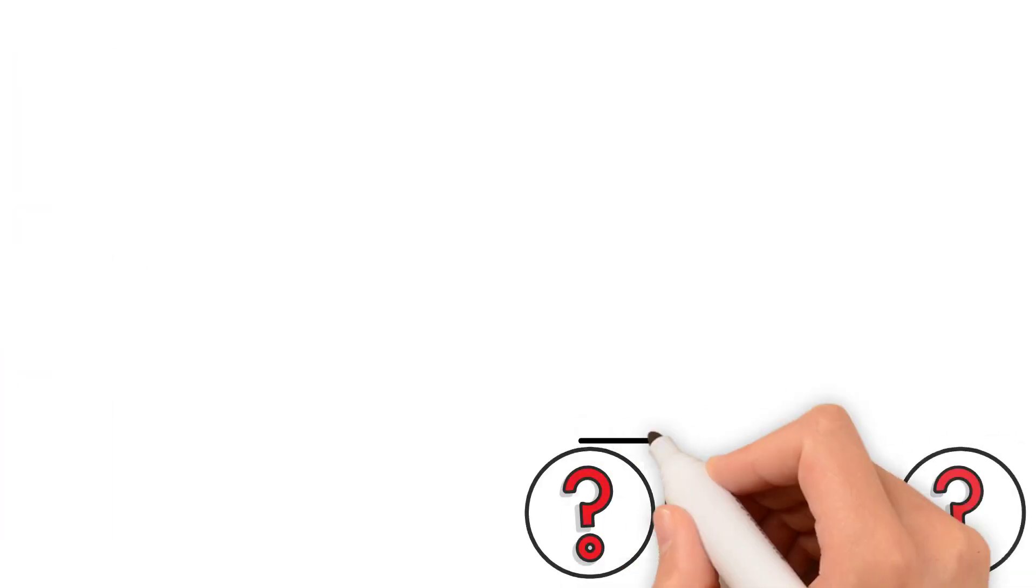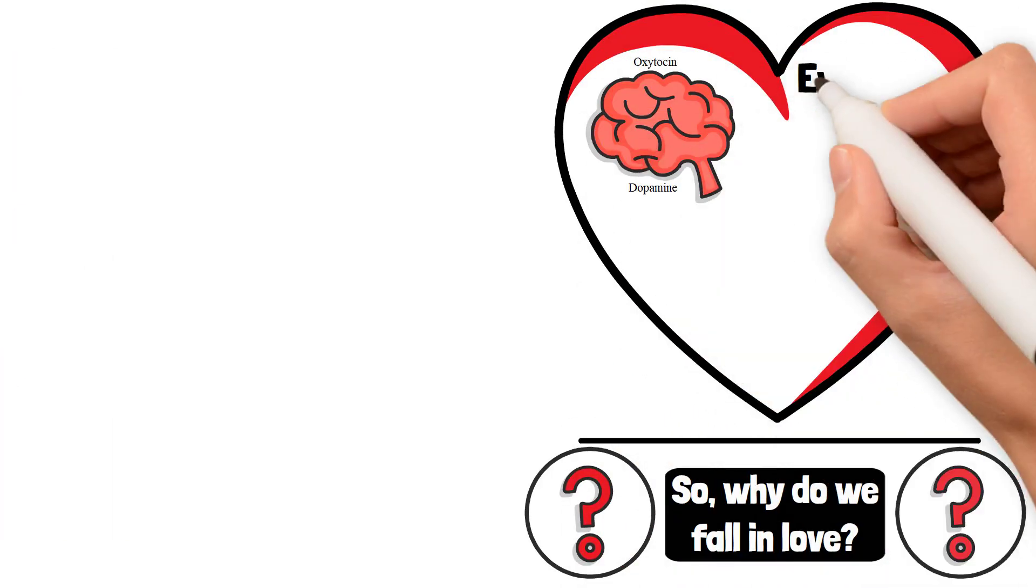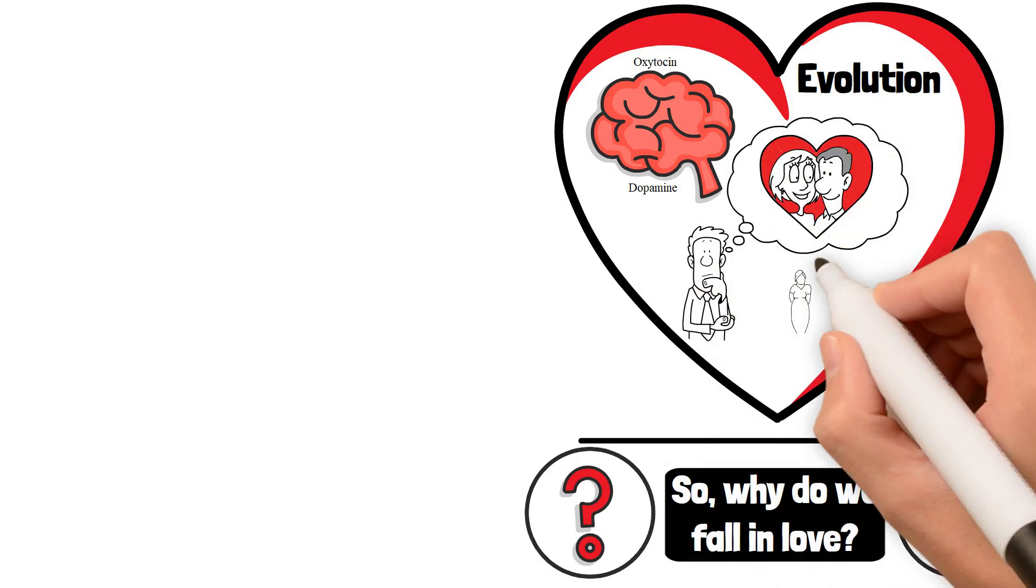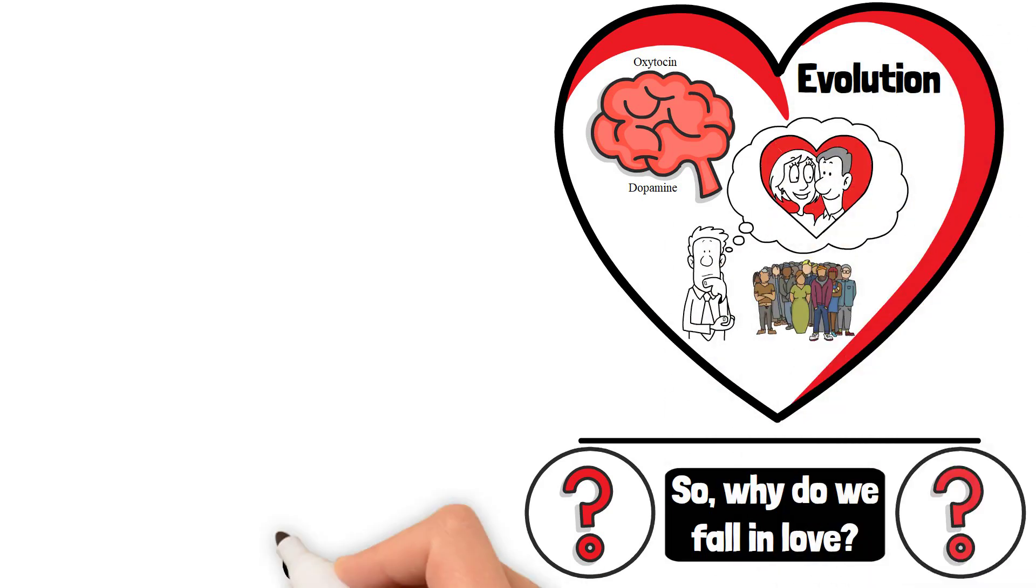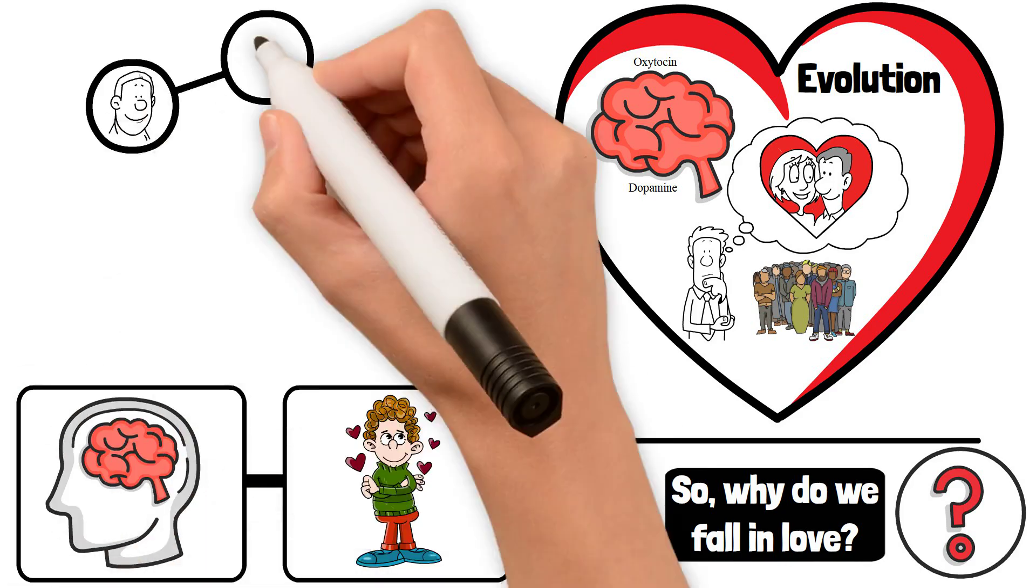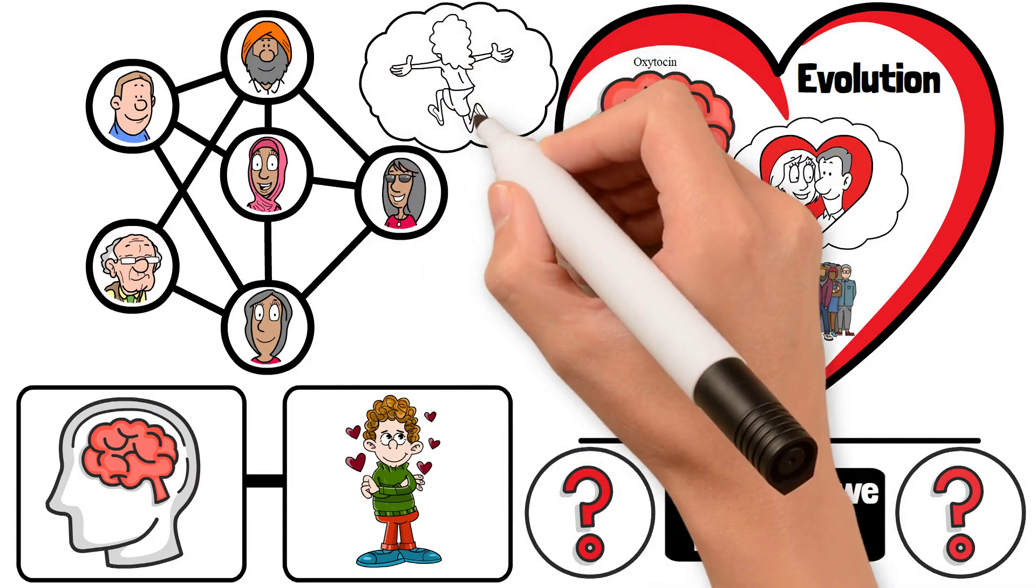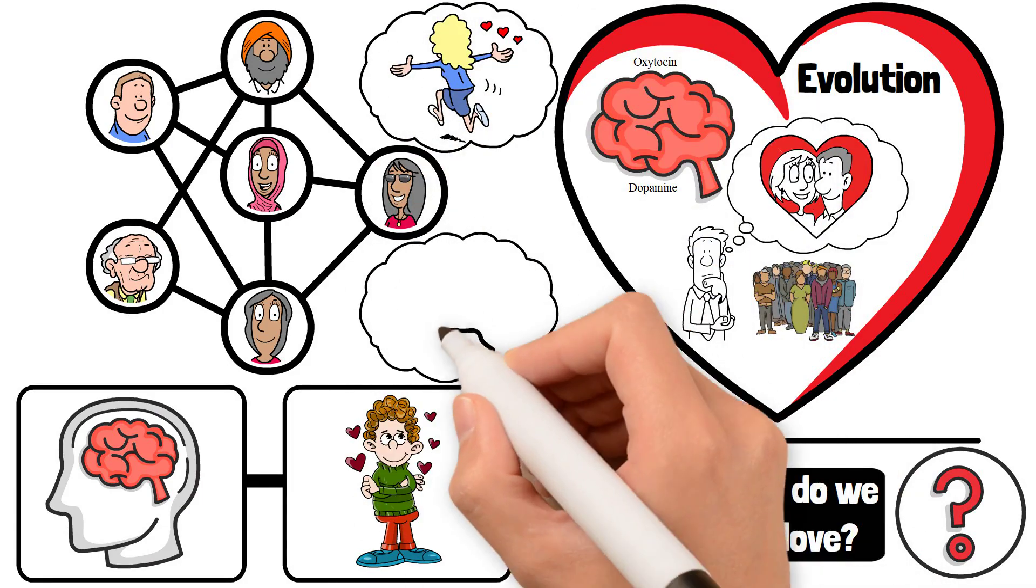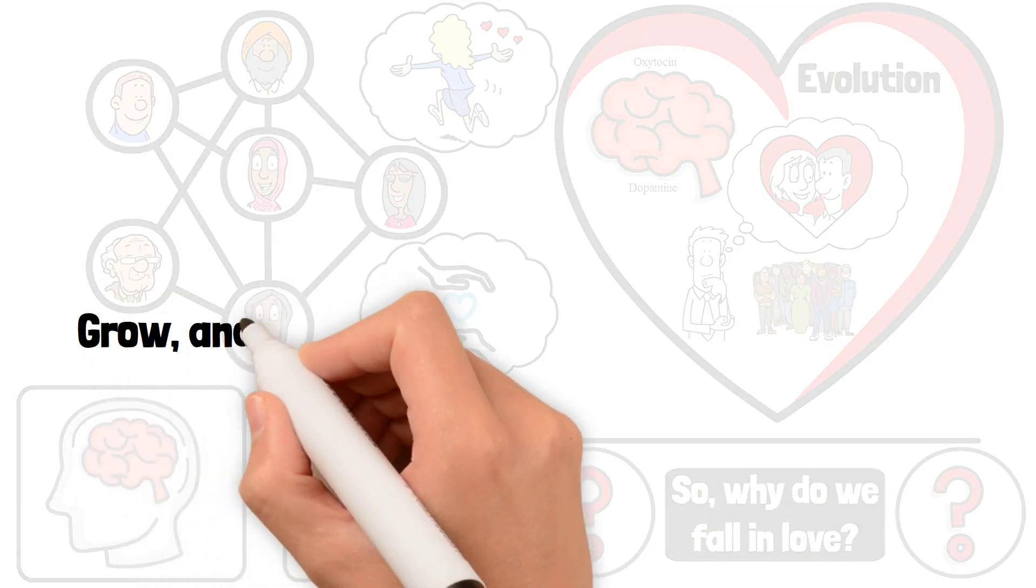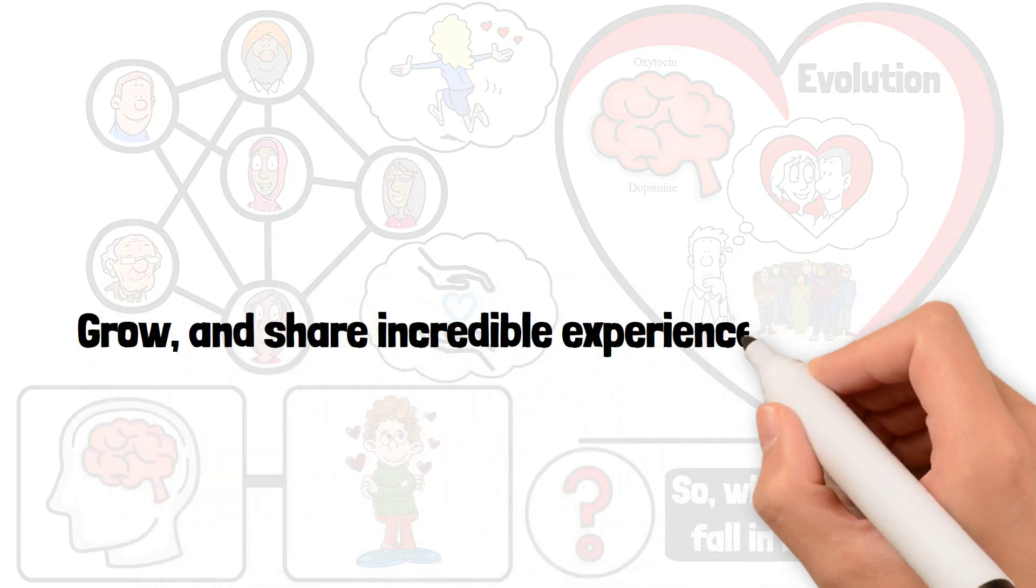So, why do we fall in love? It's a combination of chemistry, evolution, psychology, and cultural influences. Falling in love is a complex and wonderful phenomenon that unites us as humans, making us experience one of the most powerful emotions that exist. Love pushes us to connect, grow, and share incredible experiences together.